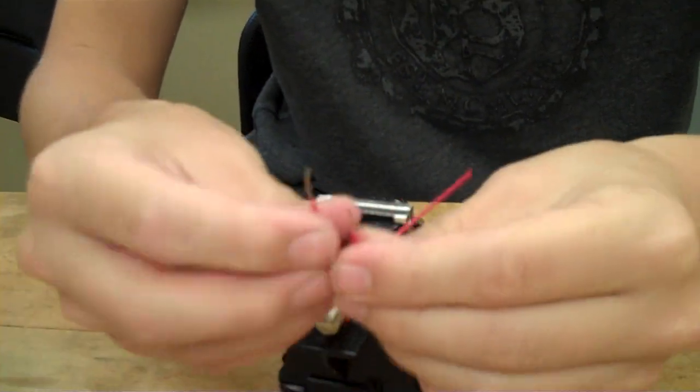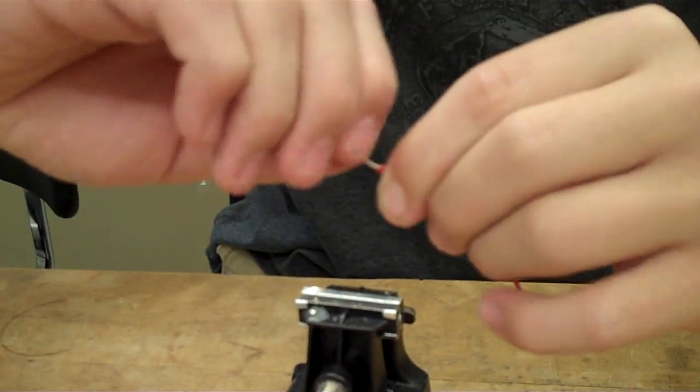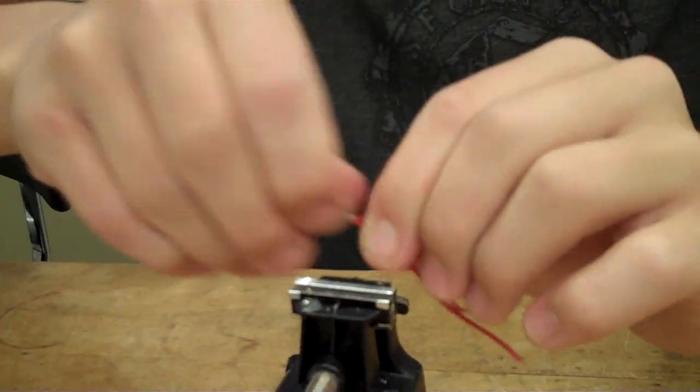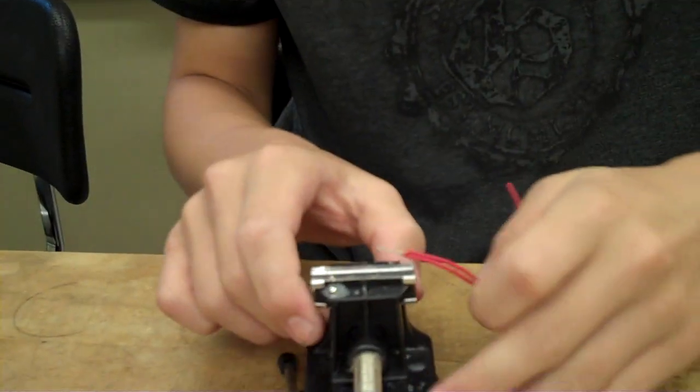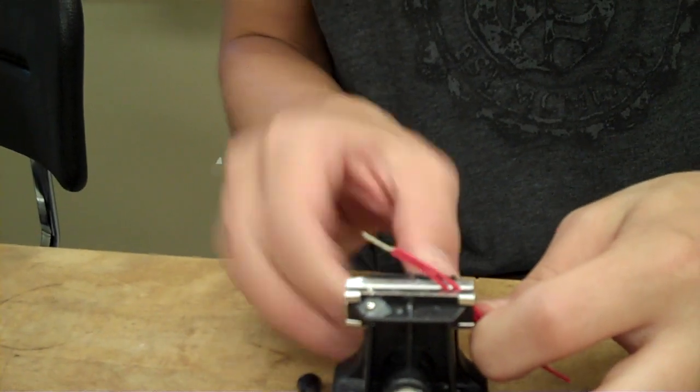Hold them together and establish a firm connection before even starting to solder, so twist these wires together as well. Then you put them in your vise and make sure that it's nice and tight so that you don't have to adjust it while you're soldering.